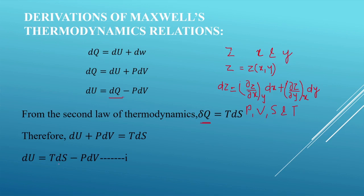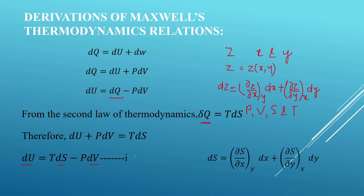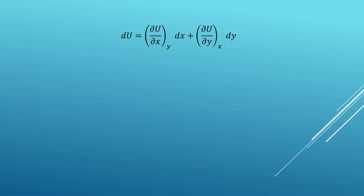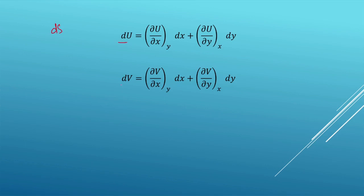In equation 1 we have three differentials: dS, du, and dv. We can express each of these using the general differential form. So we write dS = (∂S/∂x) at constant y · dx + (∂S/∂y) at constant x · dy, and similarly du = (∂u/∂x) at constant y · dx + (∂u/∂y) at constant x · dy, and dv = (∂v/∂x) at constant y · dx + (∂v/∂y) at constant x · dy.